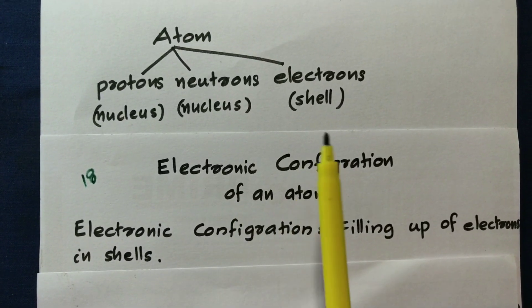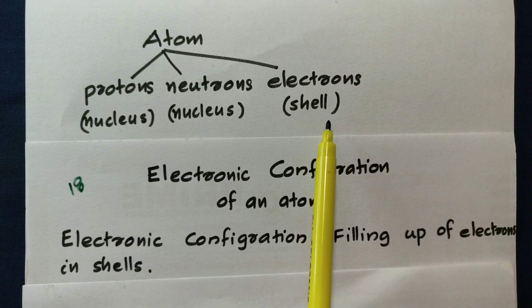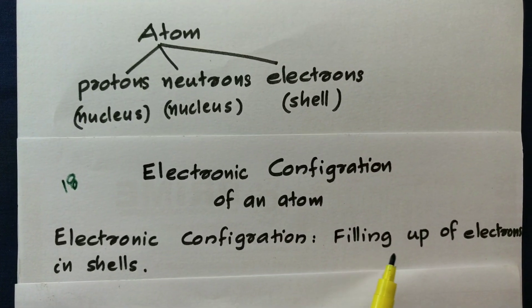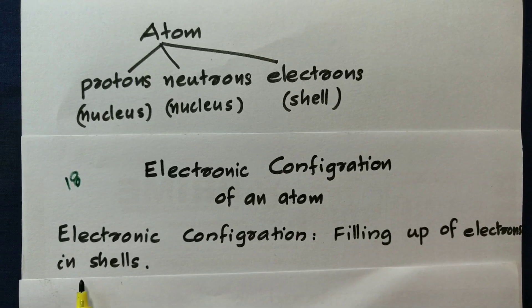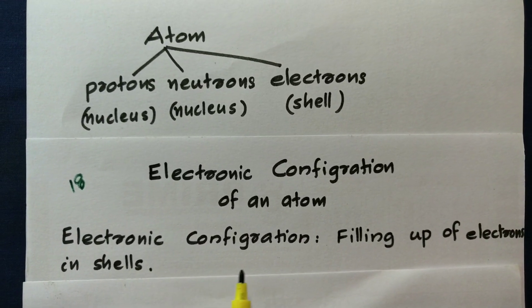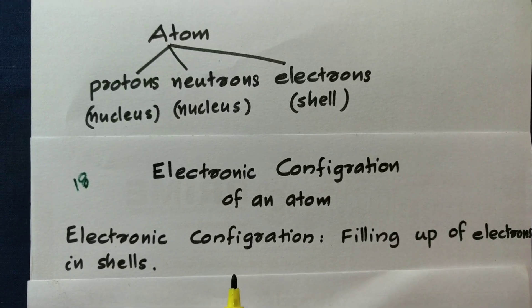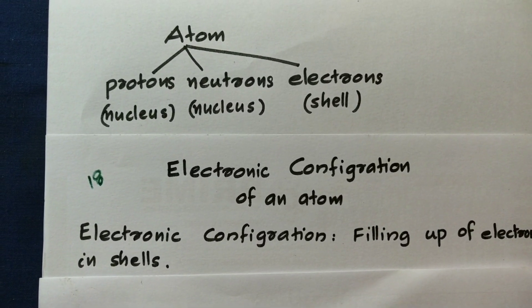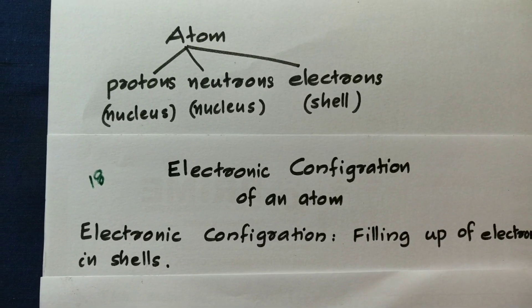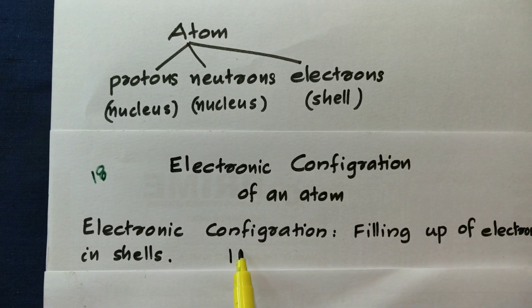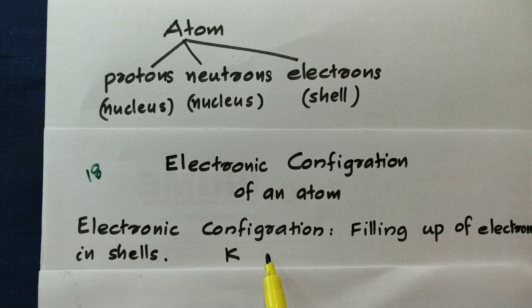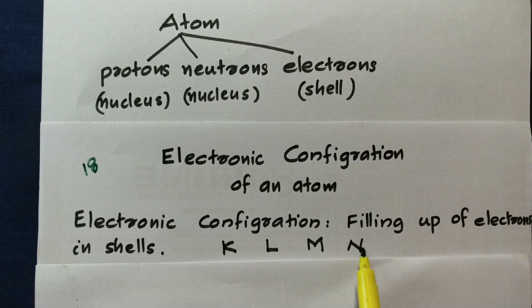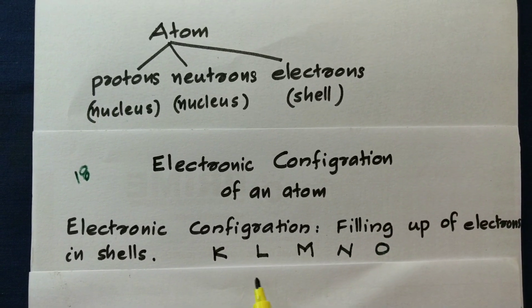The filling up of electrons in the shells is the electronic configuration. We have shells which are called by capital letters: K, L, M, N, O.